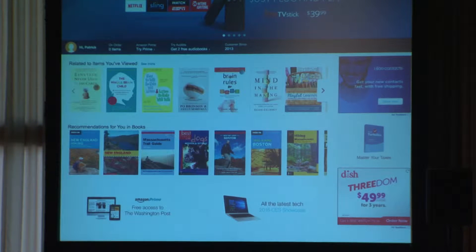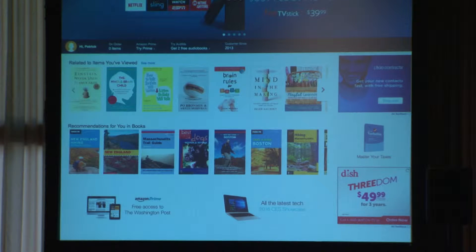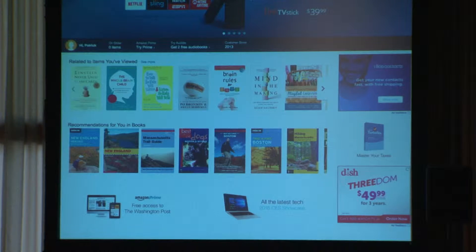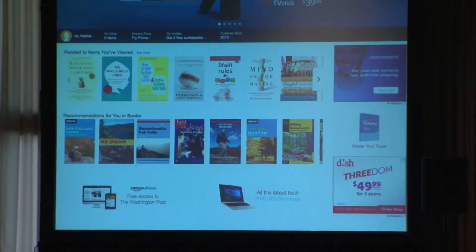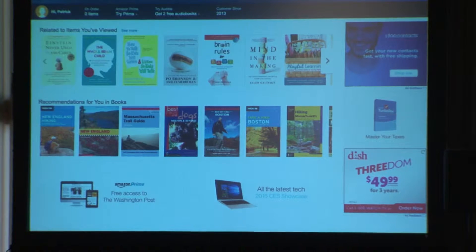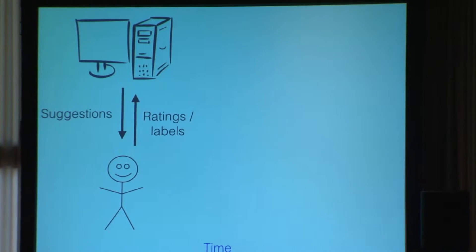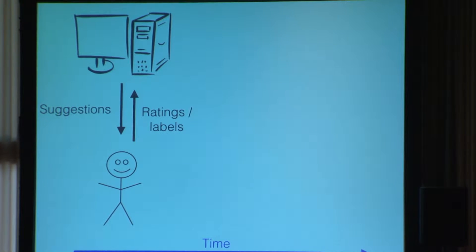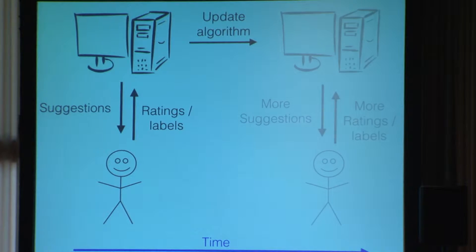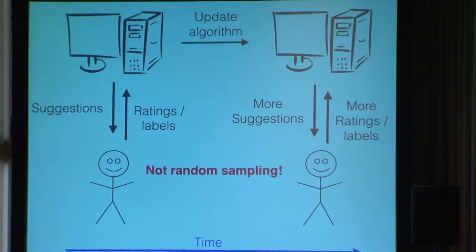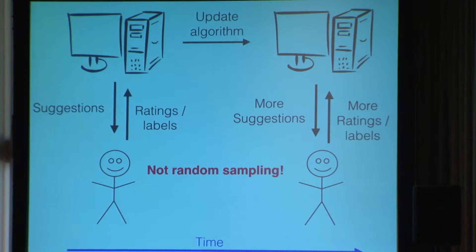My choice of whether to click, rate, or purchase something has its own systematicity — these are non-random selections by the user as well. Periodically, these recommendation systems are retrained based on these two non-random streams of information. If we draw a schematic, we get suggestions from the algorithm, then ratings by the users — neither of these processes is random. The algorithm is updated, producing more suggestions and more ratings. This is not random sampling; it has a Markovian structure where the suggestions at time t depend on ratings and suggestions at time t minus 1.